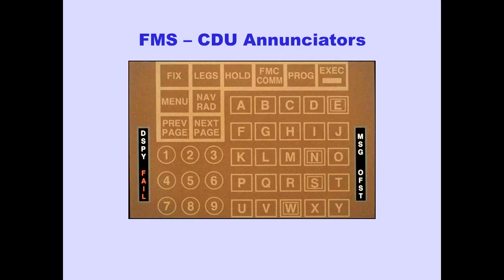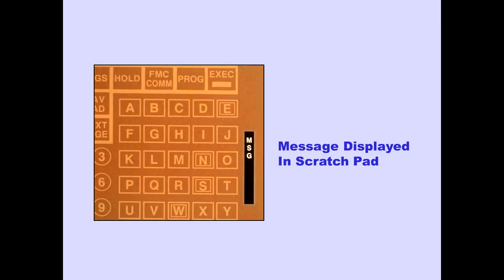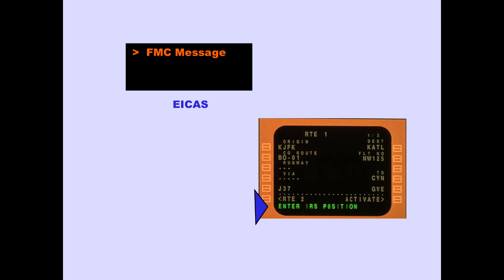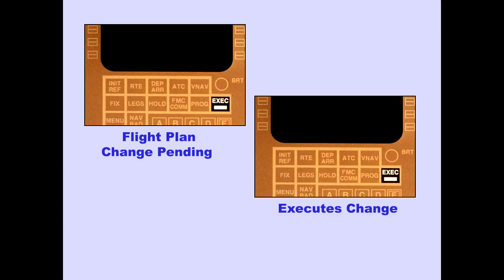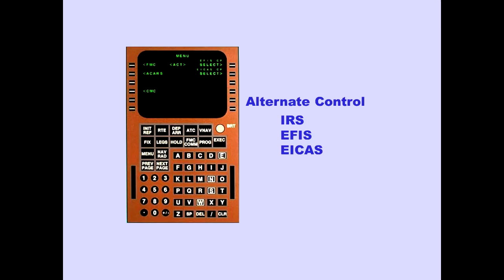The FMS-CDU enunciators illuminate to remind or notify the flight crew of various conditions. The FMS-CDU enunciator message illuminates when a message is displayed in the scratchpad. The ICAS advisory message 'FMC message' is displayed when an FMC message is displayed in the FMS-CDU scratchpad. The execute key illuminates when a flight plan change is pending; pushing the execute key executes the change. The FMS-CDU has several other uses, including alternate control of the IRS and EFIS ICAS displays. These functions are covered in standby navigation.